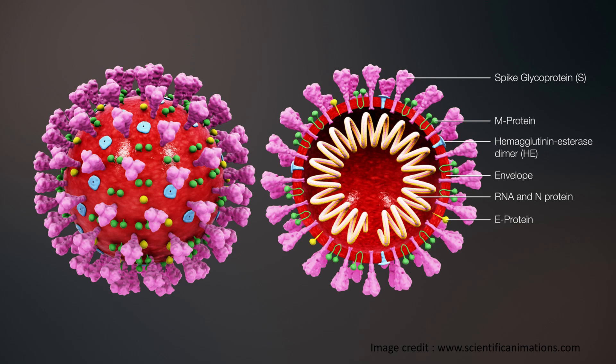Coronaviruses are large pleomorphic spherical structures with spike-like surface projections. When we term something as pleomorphic, it means they have the ability to alter their morphology, biological function, or reproductive modes in response to environmental conditions. Unlike bacteria, these viruses cannot change their own shape.